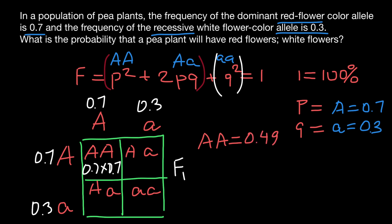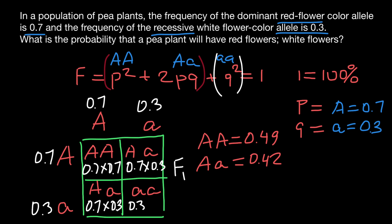Now let's find the frequency of the heterozygous genotype in the F1 generation. That is 0.7 times 0.3, which gives 0.21 — but we also have the same genotype appearing again, another 0.7 times 0.3 equals 0.21. Combining both gives 0.42 for the heterozygous genotype. The frequency of the homozygous recessive genotype is 0.3 times 0.3, which equals 0.09.